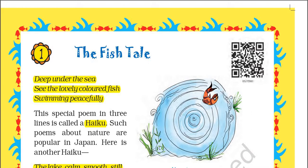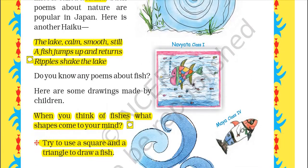Here is another haiku. The lake calm, smooth and still — a fish jumps up and returns. Ripples shake the lake.